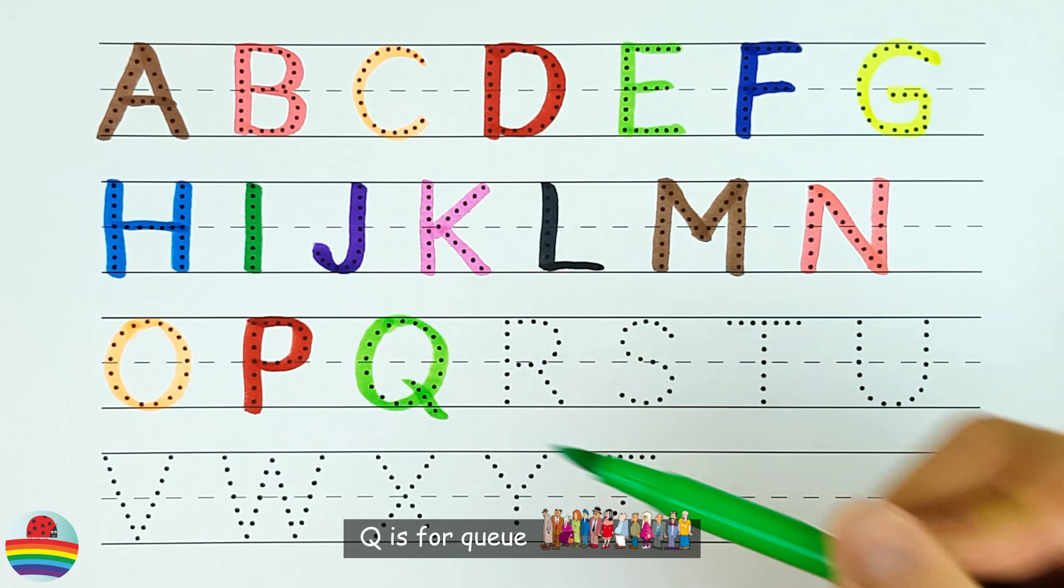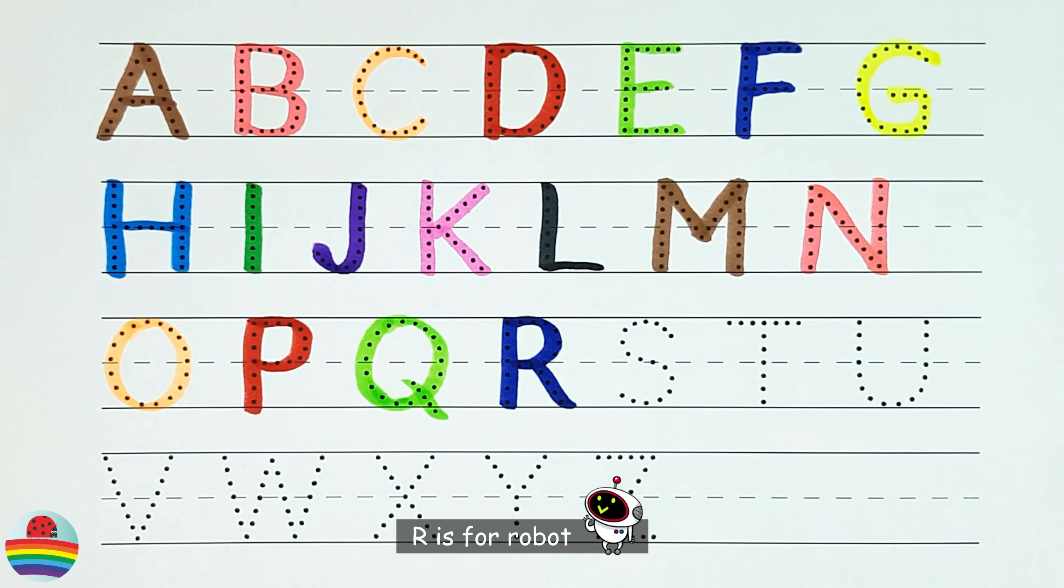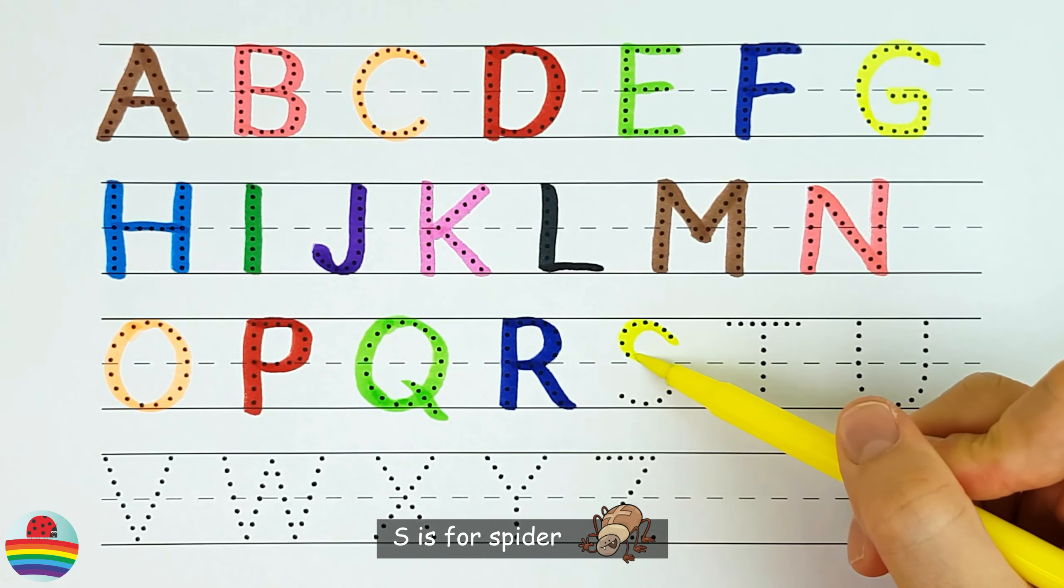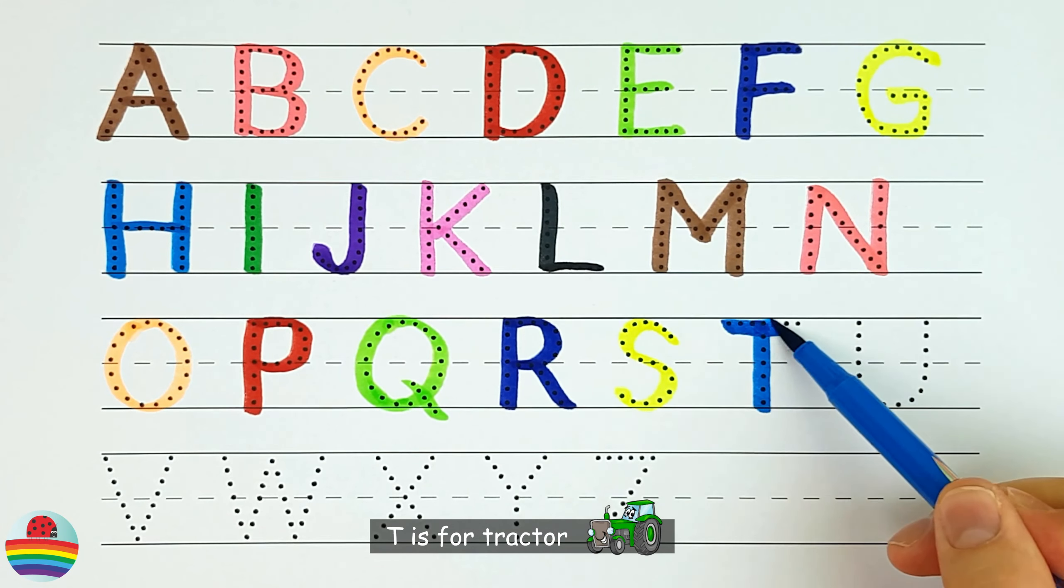Q. Q is for Q. R. R is for Robot. S. S is for Spider. T. T is for Tractor.